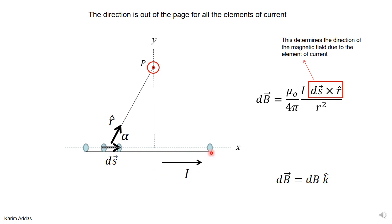The magnetic field due to an element of current is dB = μ₀·i·(ds × r̂) / (4π·r²). The ds × r̂ part gives the direction of the magnetic field due to the element, pointing out of the page (denoted by the circle with a dot). So we can write the magnetic field as dB — the magnitude — times the k̂ direction, since the direction is k̂ for all elements. We can now focus entirely on getting the magnitude and forget about the direction for the rest of the problem.